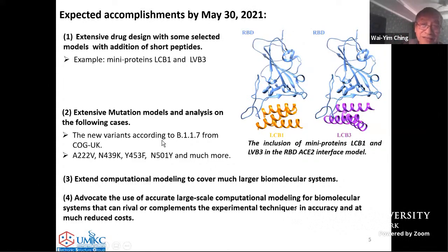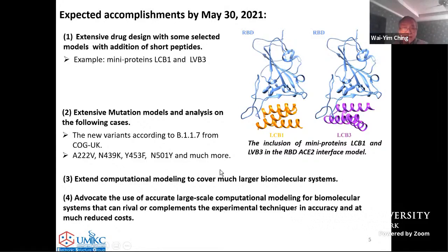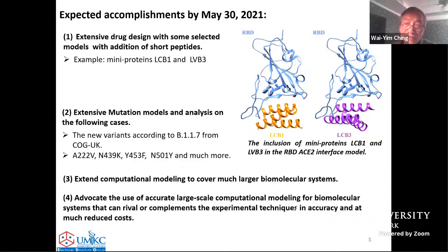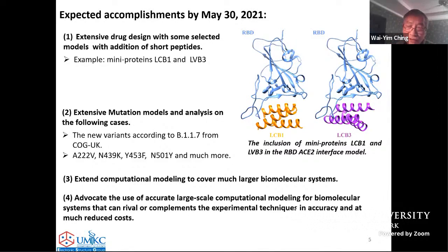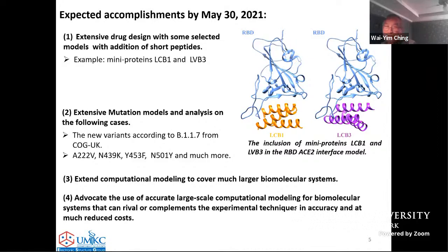There are many new variants according to the B.1.1.7 report from COG United Kingdom — four examples are shown here, and there are many more. Our longer-term goal is to extend computational modeling to cover much larger biomolecular systems. Even though our current calculations are among the largest that can be envisioned, we are ambitious and want to extend to even larger systems. We want to advocate the use of large-scale computational modeling for biomolecular systems that can rival or even complement experimental techniques in accuracy at a much reduced cost.